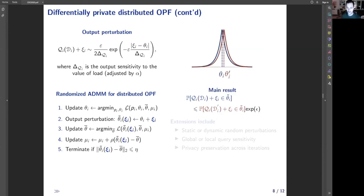The contribution of our work is to show that these queries are made differentially private, and the results are statistically similar on adjacent load datasets. We provide several extensions to show that we can use either static or dynamic random perturbations, we can use either global or local query sensitivities to attain different strengths of privacy guarantees, and we can preserve privacy guarantees not just for single iteration but also across several iterations.